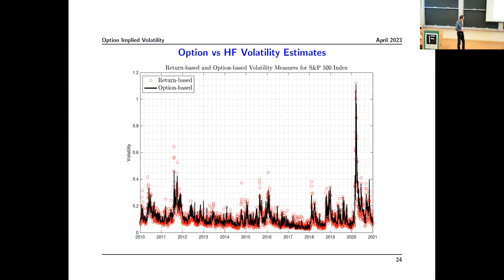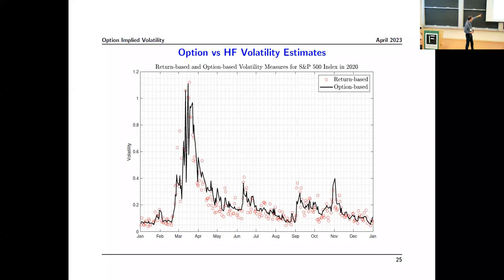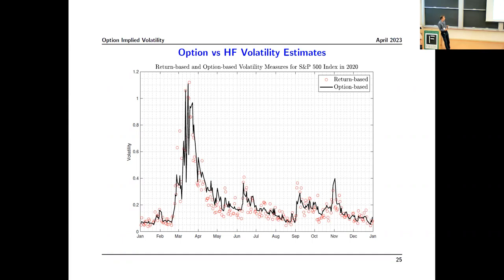Zooming in on 2020 — an ideal laboratory with both very low and very high volatility — the black line shadows the red circles well, both when volatility spiked dramatically and when it fell. Unlike the VIX or at-the-money Black-Scholes implied vol, which in the simulation were elevated by 40–50 percent above true volatility, this estimator tracks the realized volatility measures much more closely.